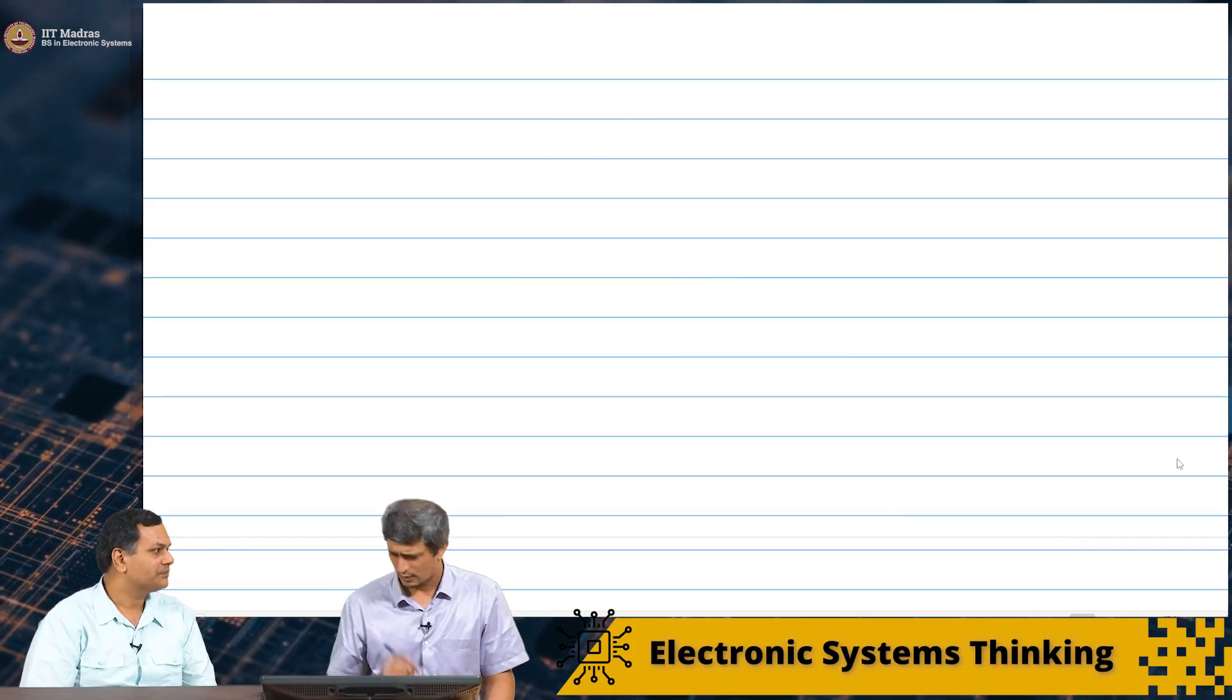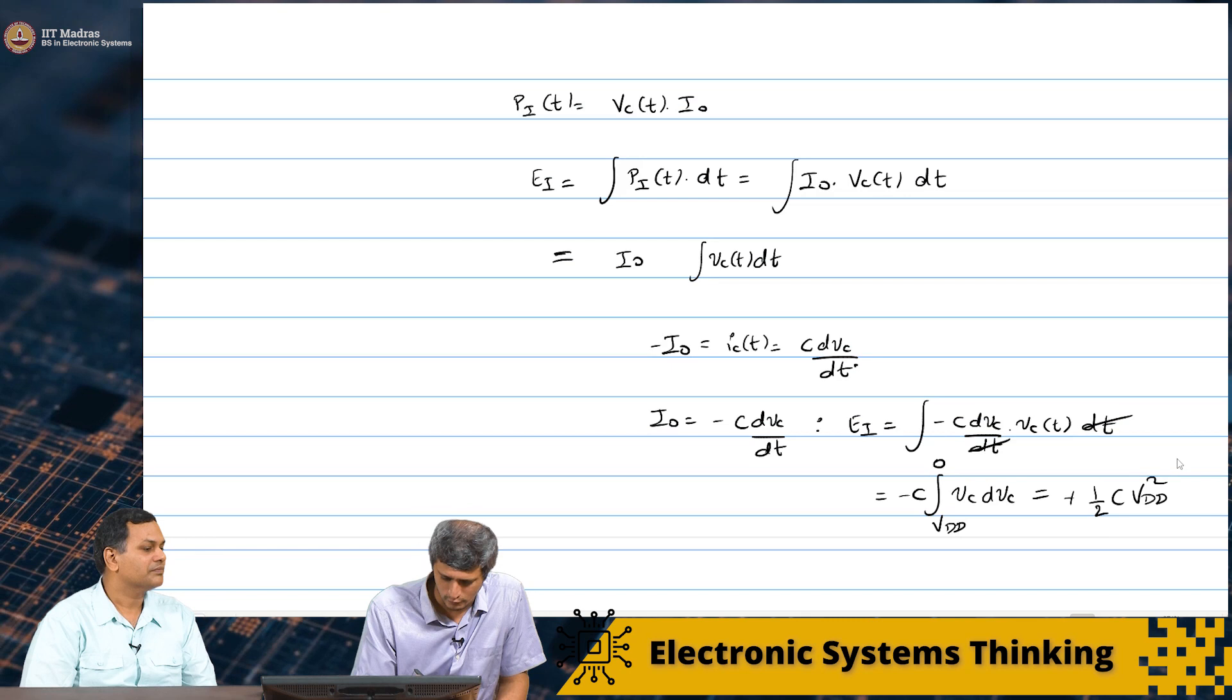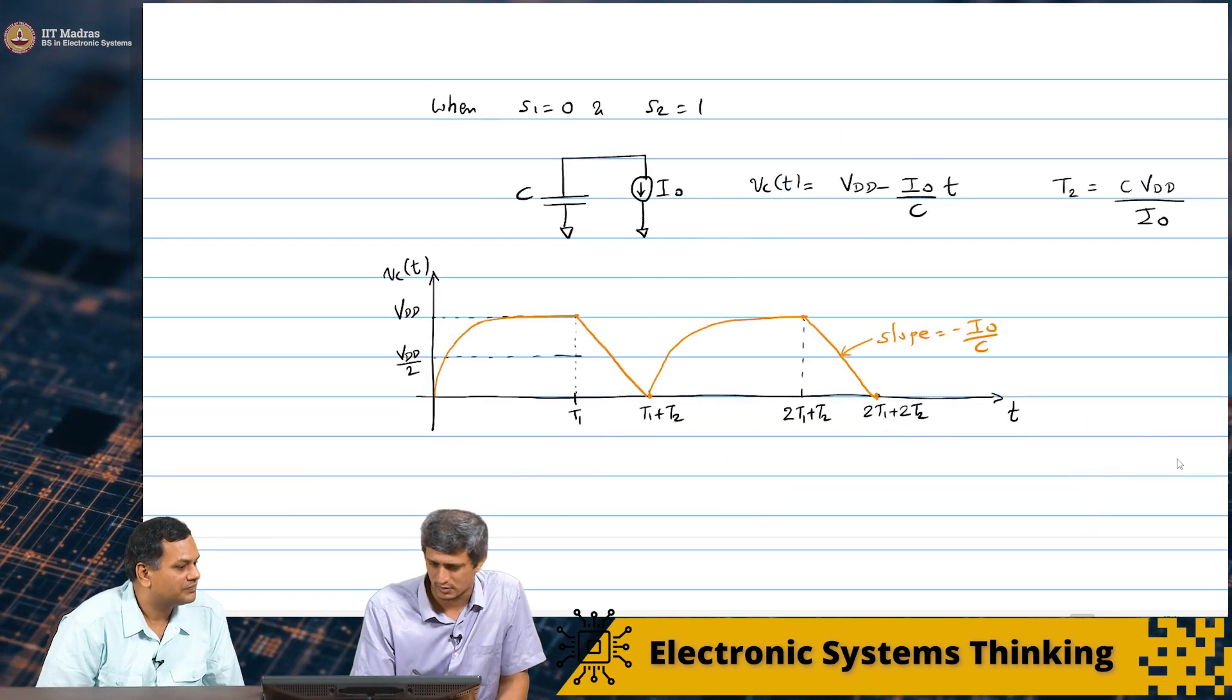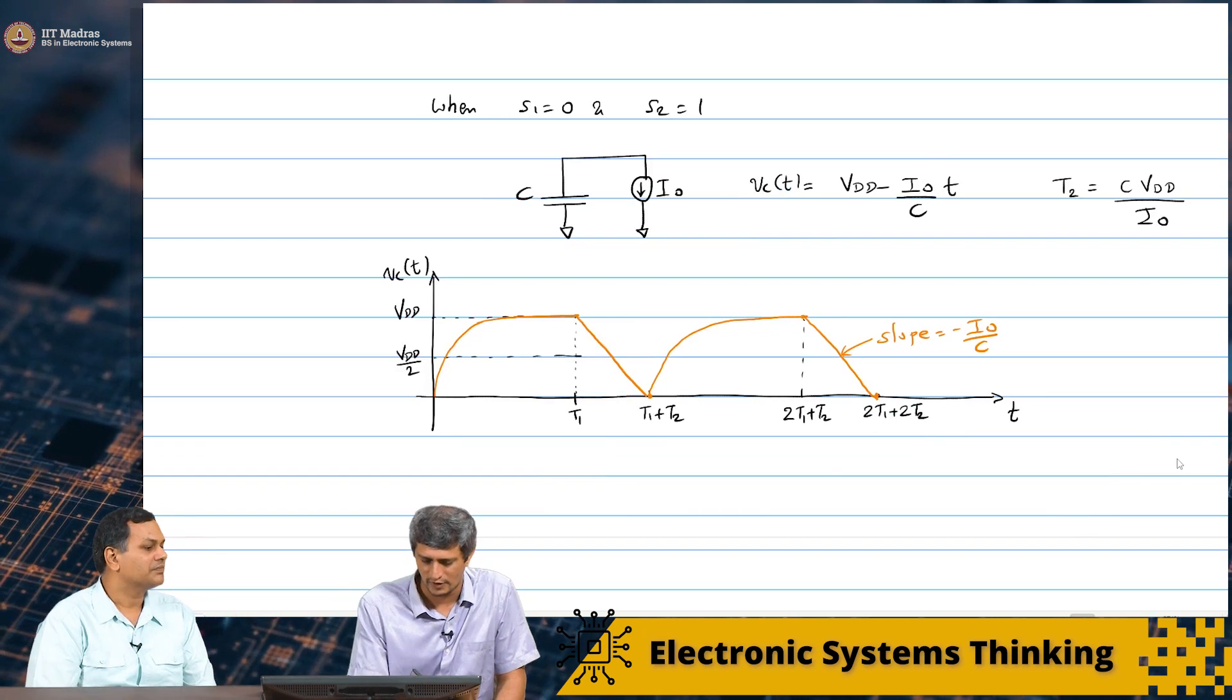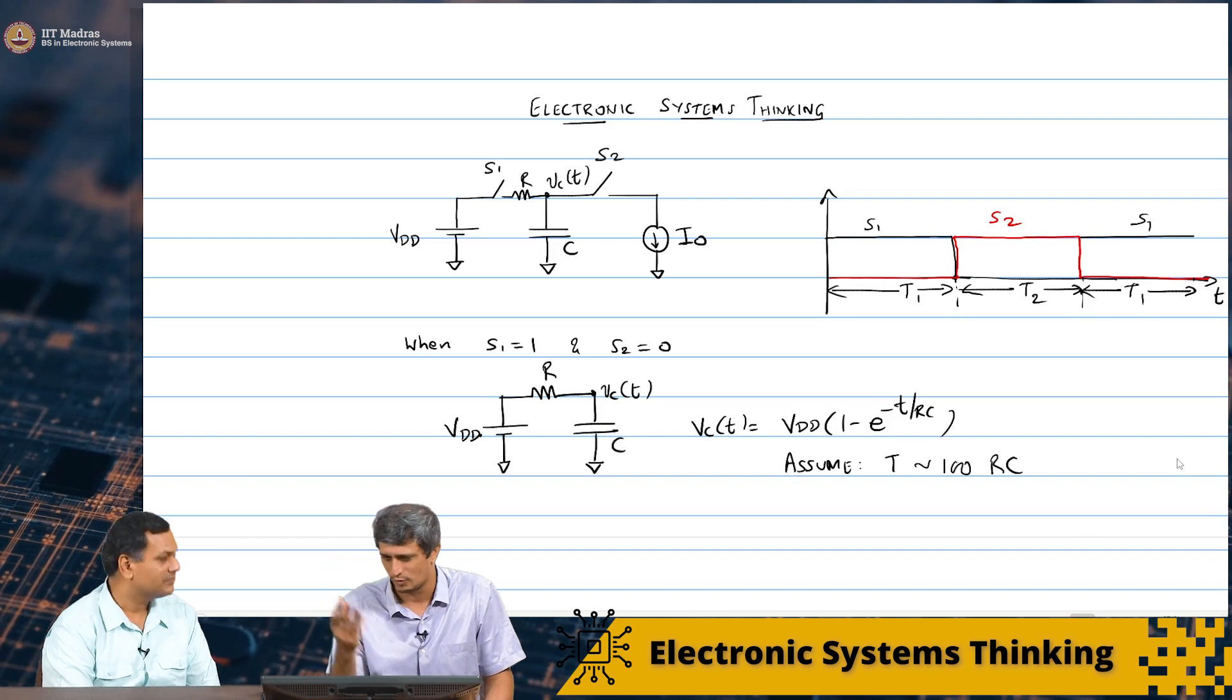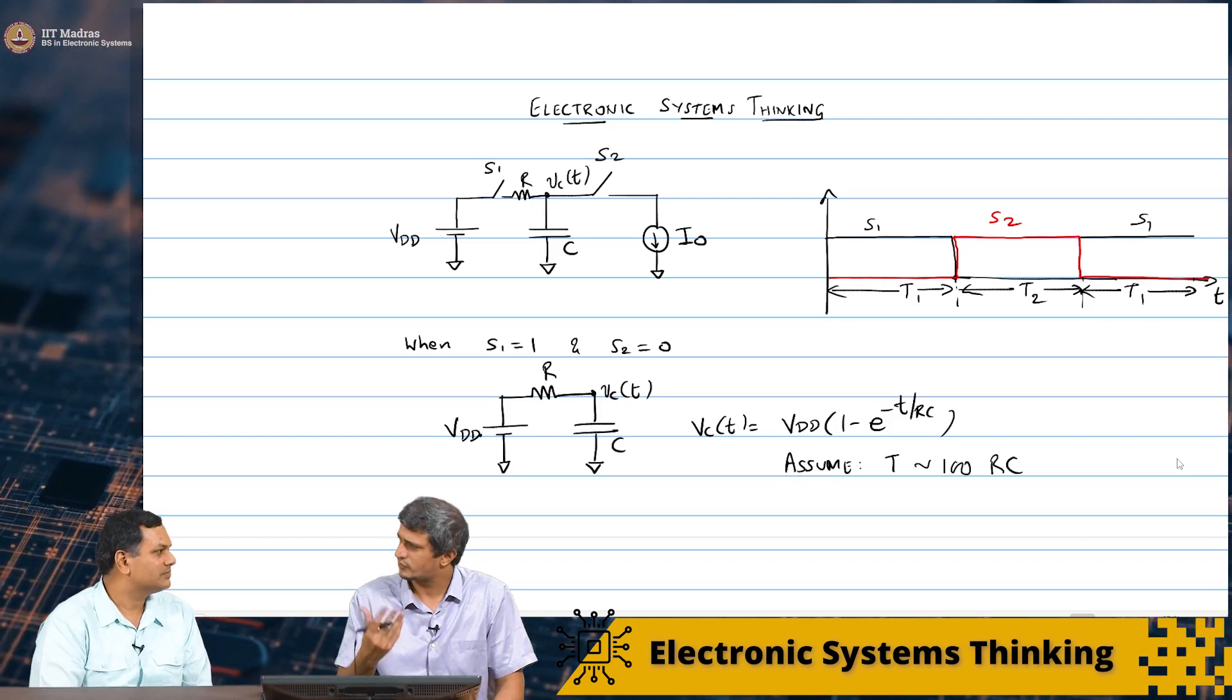So, one question I had for you was we looked at what happens to the power for various values of R. Earlier we did 1 kilo ohm, 10 kilo ohm, 1 mega ohm, something. What happens if R is 0?